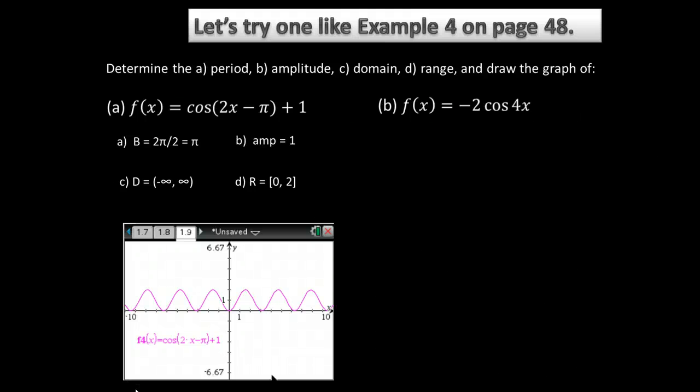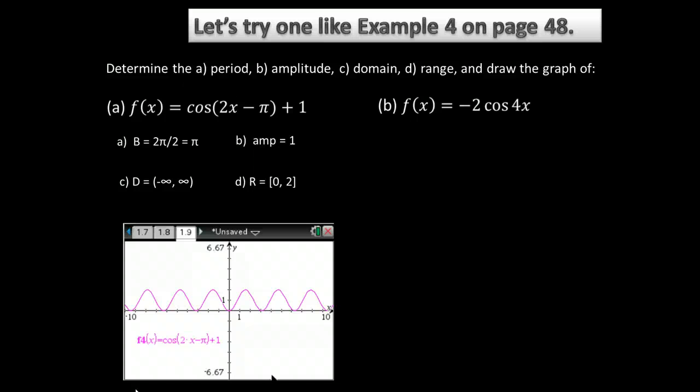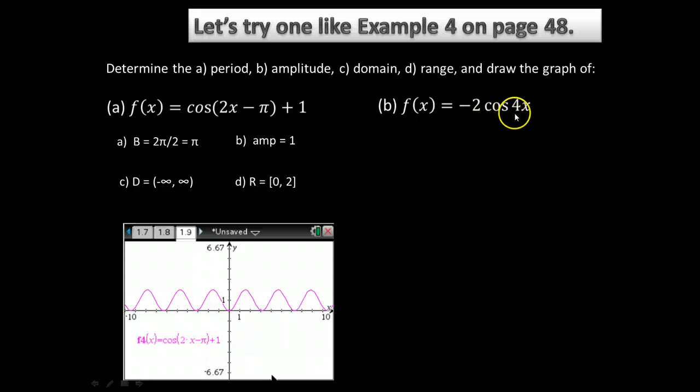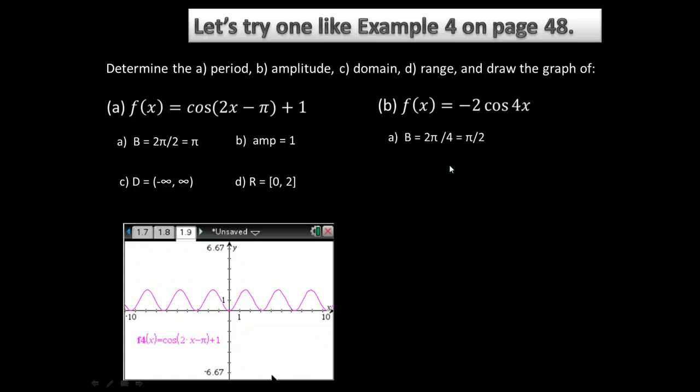Part B, the function is f(x) = -2cos(4x). So part A, the period. Remember, the period is the normal period of cosine, which is 2π, divided by the coefficient of x. So 2π over 4 is going to give us a period of π over 2.